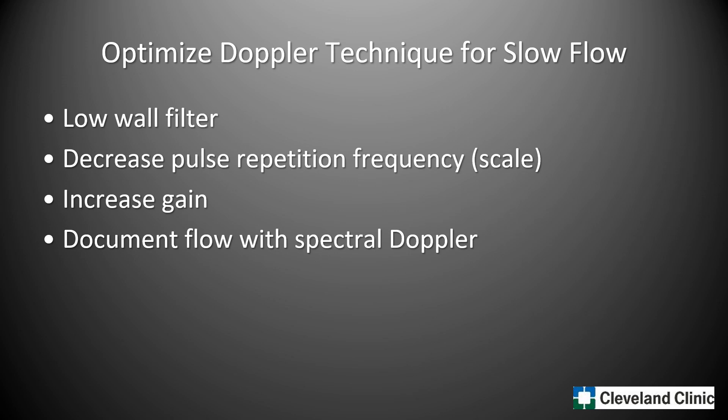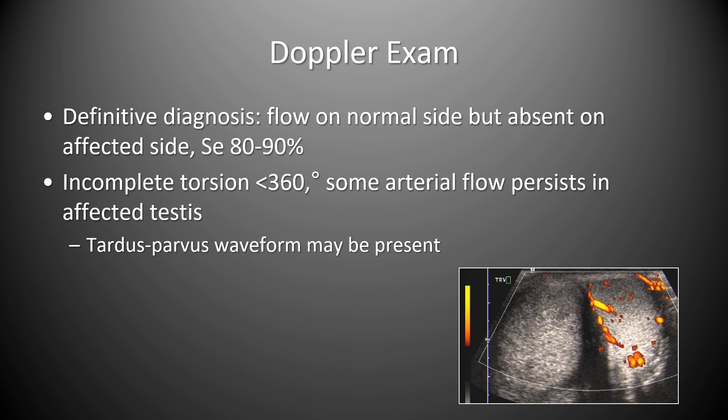When assessing for testicular torsion, one should optimize Doppler technique for slow flow. This includes decreasing the wall filter, decreasing the pulse repetition frequency or scale, increasing the Doppler gain, and documenting flow with spectral Doppler. A definitive diagnosis relies on flow on the normal side but absent flow on the affected side, with a sensitivity of 80 to 90 percent.